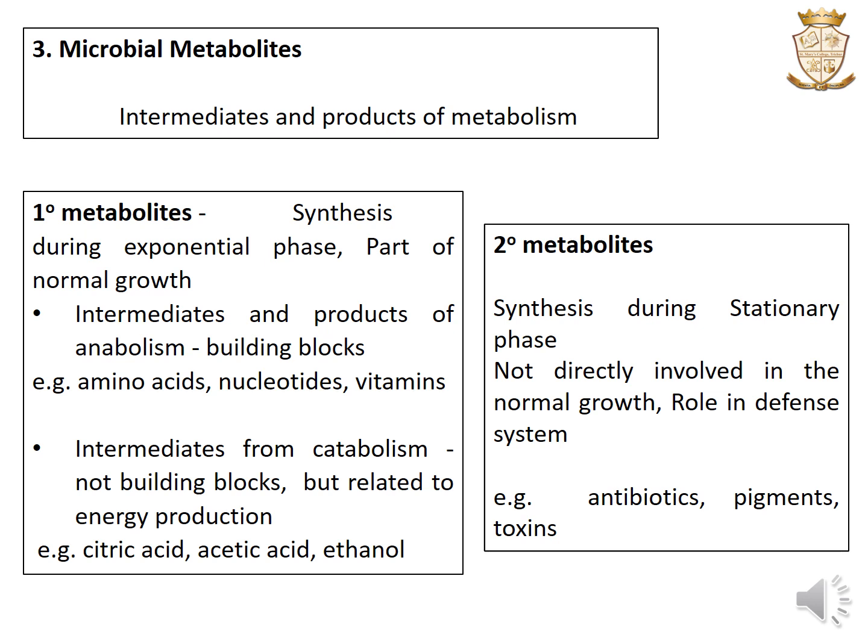The second type of primary metabolites are intermediates from catabolism. These are not synthesized as building blocks but are synthesized in relation to energy production. Examples of these primary metabolites are citric acid, acetic acid, ethanol, etc.